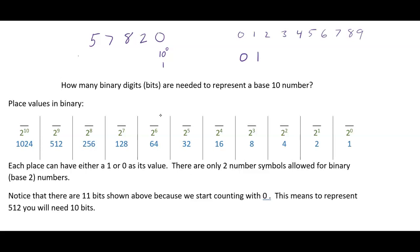In base 2, the base is the basis of the place value. In base 10, place values go 10 to the zero (ones), 10 to the first (tens), 10 to the second (hundreds). So this 8 is worth 8 times 100, this 7 is worth 7 times 1000, and this 5 is worth 5 times 10,000. In base 2, we follow the same pattern using exponents on 2.